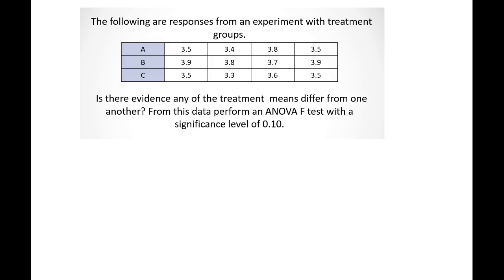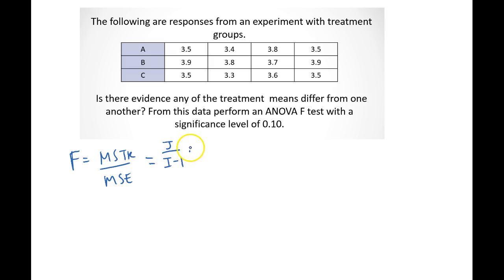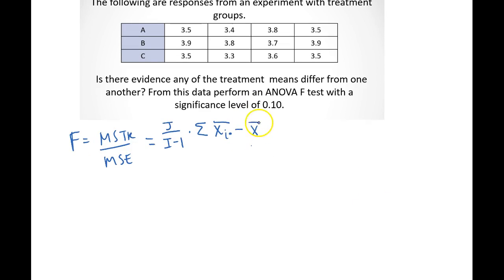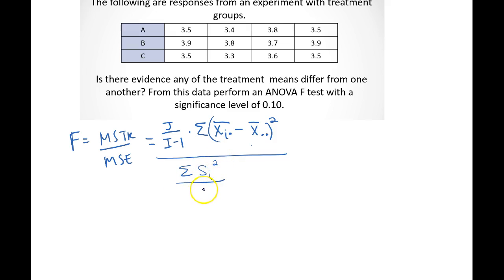We're going to calculate the F test statistic by hand. Our F test statistic is equal to MSTR — the mean squared for the treatment — over the mean squared error. The mean squared treatment formula is J over I minus one, times the summation of each individual treatment mean minus the grand mean, X-bar dot dot, squared. The mean squared error is equal to the sum of all the individual sample variances SI squared, all over the number of treatments I.